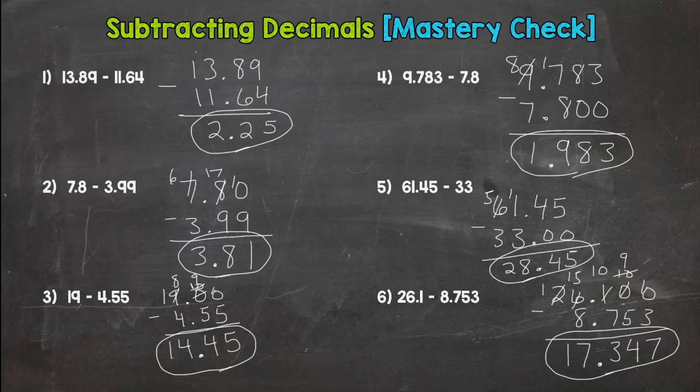So that is the subtracting decimals mastery check. Hopefully 5 or 6 correct there out of the 6 - that would really show you know what you're doing. And if you didn't hit 5 or 6 correct, hopefully you saw where your mistakes were and you can improve upon those mistakes.